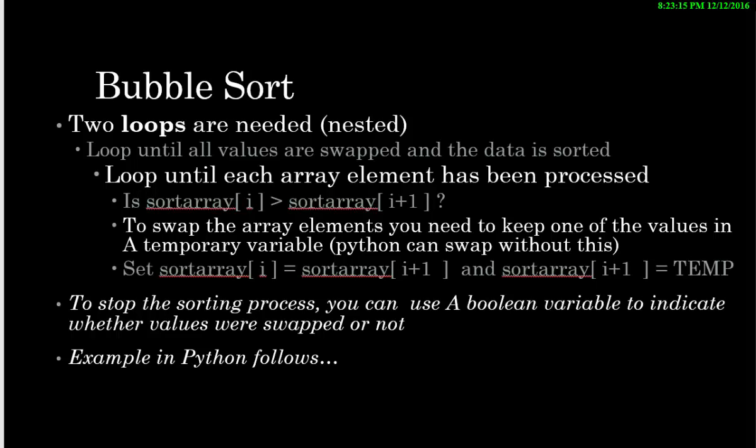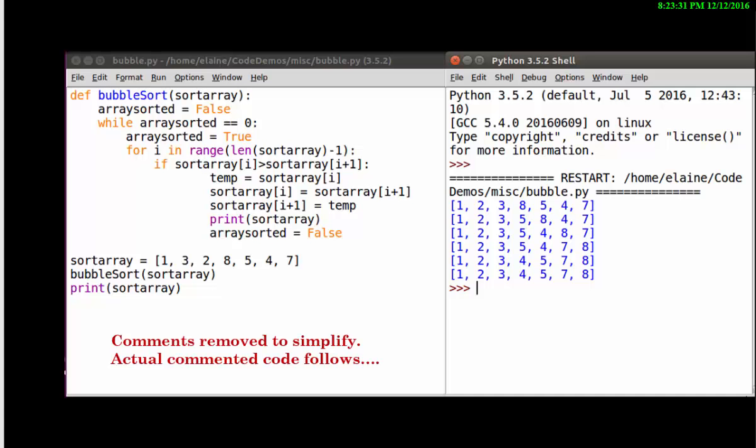And when swapping the array elements you need to actually keep a temporary variable of one of the items because you're about to overwrite it here. And so you need to keep this one safe. And then you can use it when you paste the value into I plus one.